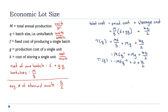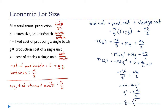Set the derivative equal to zero and solve for q. Moving terms around: -mf/q² = -k/2. The negatives cancel, and cross-multiplying gives 2mf = kq². So q² = 2mf/k, and taking the square root of both sides: q = √(2mf/k). That is our formula for the economic lot size — the batch size that minimizes our total costs.